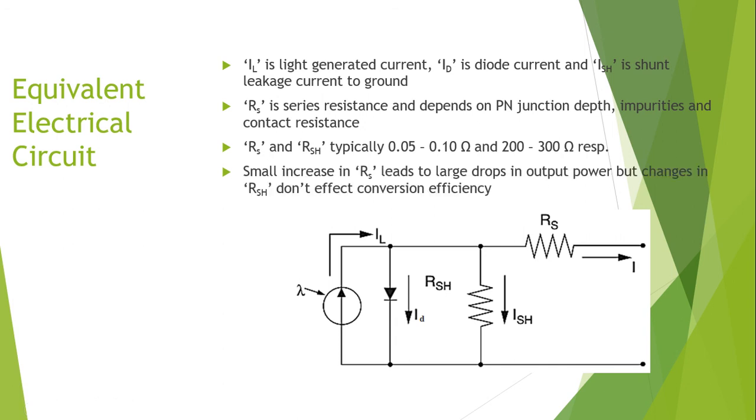Small increase in RS will lead to a larger drop in output power, but changes in the shunt resistance will not usually affect the overall conversion efficiency of a solar cell.